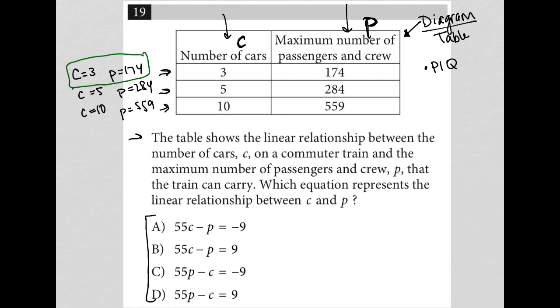plug it into choice A and test whether it's correct by plugging those values in. So if C is 3, that means I'd have 55 times 3 minus, if P is 174, becomes minus 174 equals negative 9. So I'd have negative 9. 55 times 3 is 165.